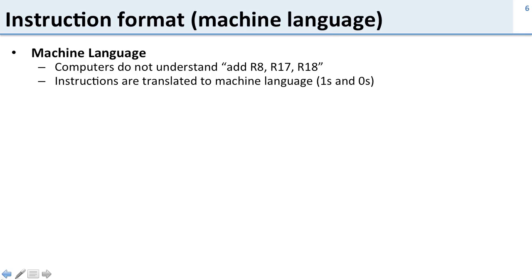These ones and zeros are called machine language. The problem is that computers don't understand instructions like 'add R8, R17, R18'. They need it translated into ones and zeros before they can understand what's going on.